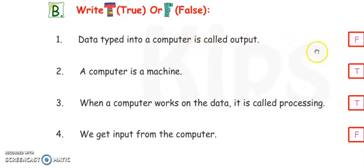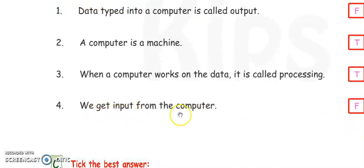Next, a computer is a machine. Yes, it is true, so you have to write T. Next, when a computer works on data, it is called processing. Yes, it is true. Now write here T.